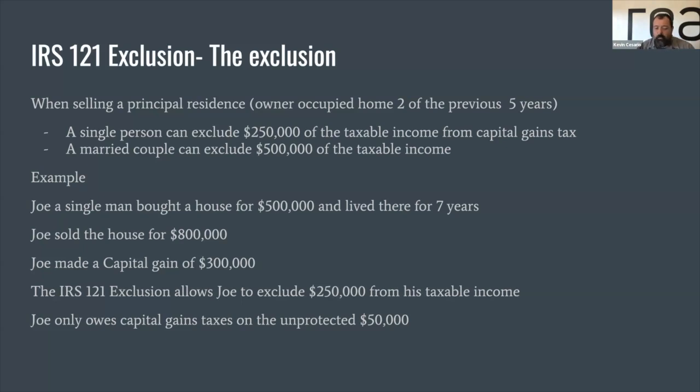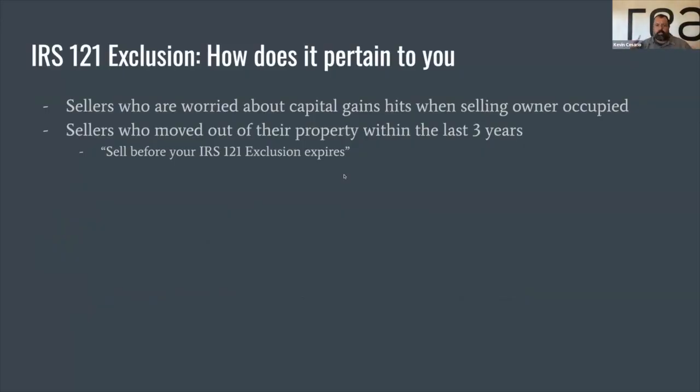The IRS 121 exclusion allows Joe to set aside 250,000 of his taxable income, so Joe only owes capital gains on the unprotected 50,000. If Joe was married and he and his spouse sold the home for 800,000, they would have 500,000 of capital gains tax-free — so that 300,000 they made in capital gains, they get to keep all of it. That's the IRS 121 exclusion, specifically for owner-occupied principal residences. So if you own your home and live in it, you don't necessarily have to pay all the profits in capital gains.